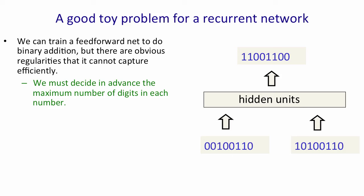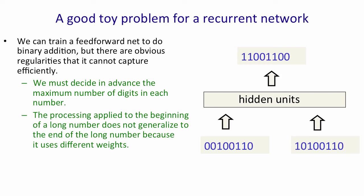We have to decide in advance what the maximum number of digits is for both of the input numbers and for the output number. And more importantly, the processing that we apply to different bits of the input numbers doesn't generalize. That is, when we learn how to add up the last two digits and deal with the carries, that knowledge is in some weights. And as we go to a different part of a long binary number, the knowledge will have to be in different weights. So we won't get automatic generalization.